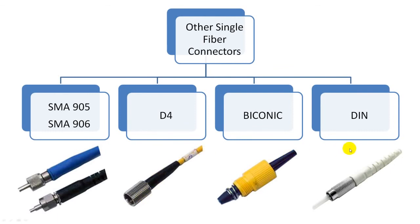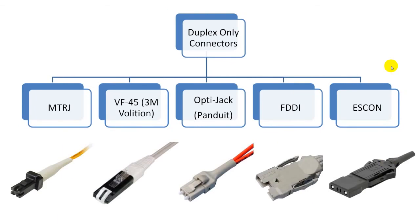One less common one is called the DIN connector. These connectors are available in duplex, two fiber version only. They do not have a simplex, single fiber version. The MTRJ connector is a small form factor duplex connector. It has both fibers in a single polymer ferrule. It is available in multimode version only. It has a snap coupling mechanism like the LC connector.